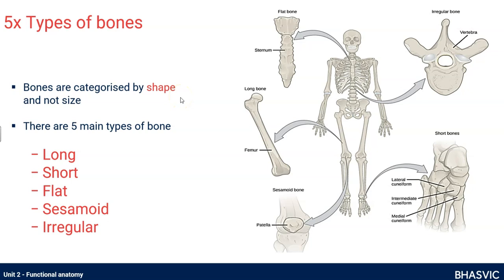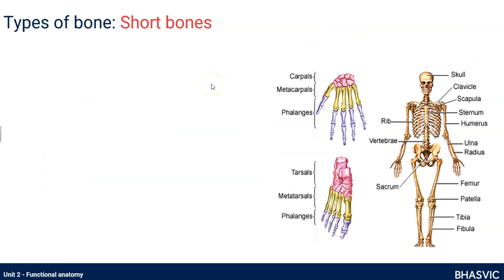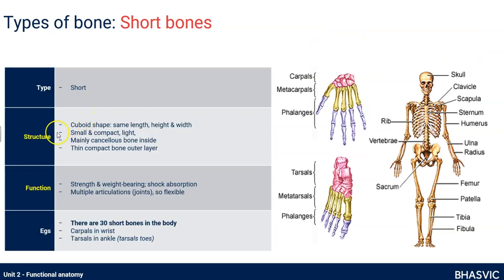For each type of bone you need to know how they are structured for the function they have and what examples you can give. Starting with short bones: short bones are cuboid in shape, meaning they're the same length, height and width — a bit like a dice or a cube. That cube has compact bone on the outside and inside it's made of cancellous bone, that honeycomb, holey bone tissue.